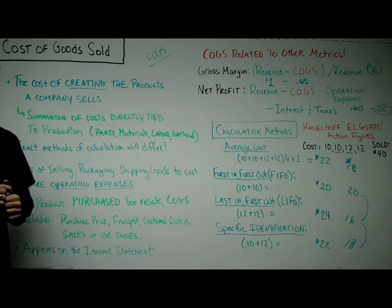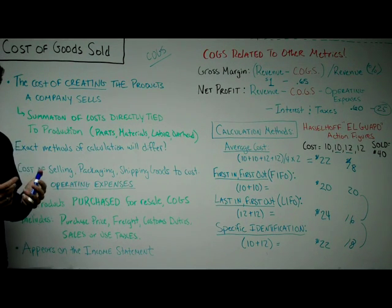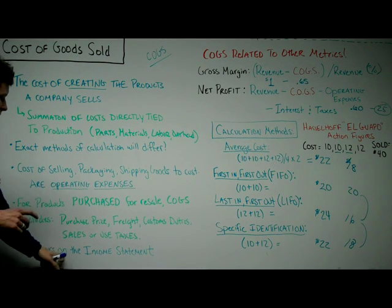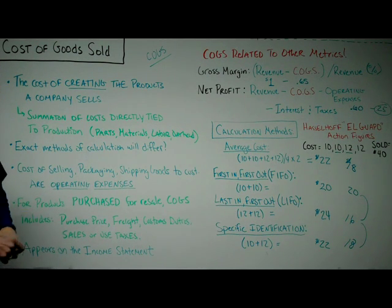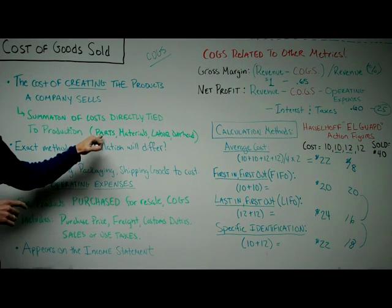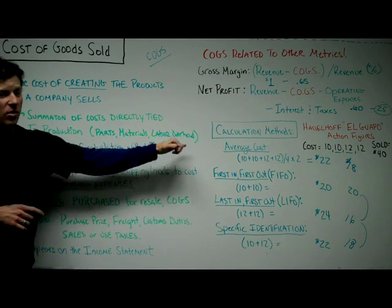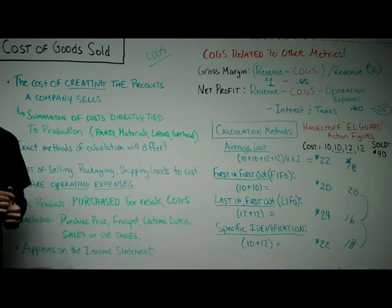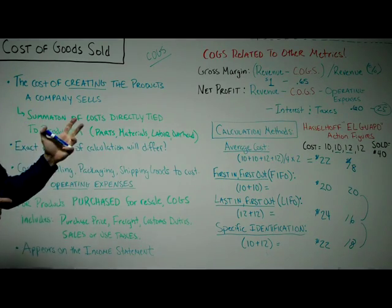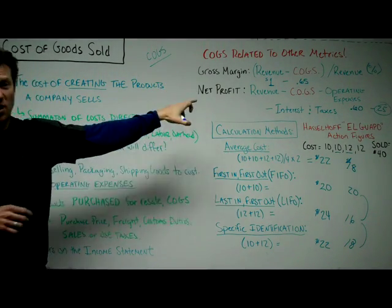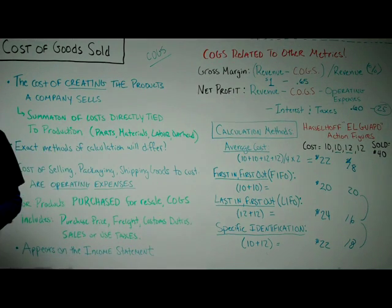That's essentially cost of goods sold. It's one of the key core components on the income statement that we use to determine how much it costs in parts, materials, labor, and overhead to generate a product. And then we use cost of goods sold to figure gross margin and net profit, among other things.